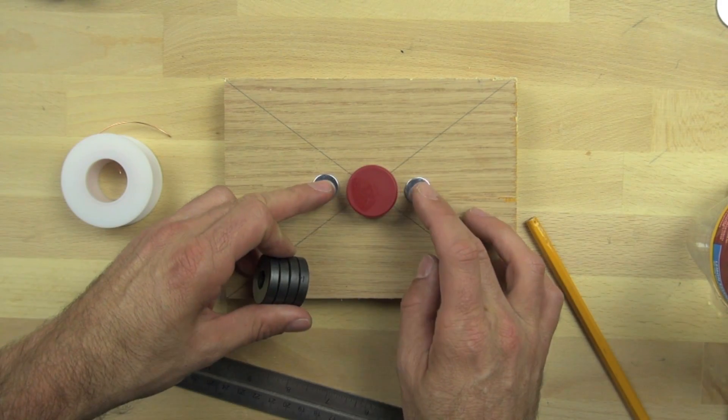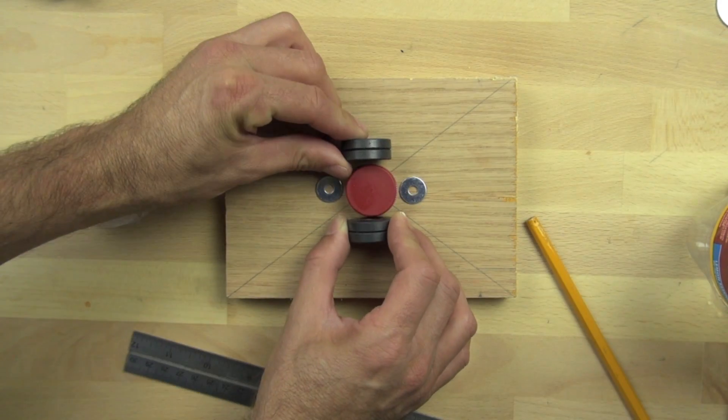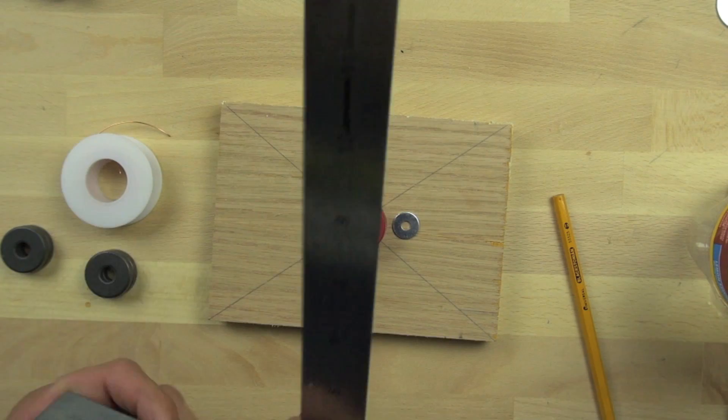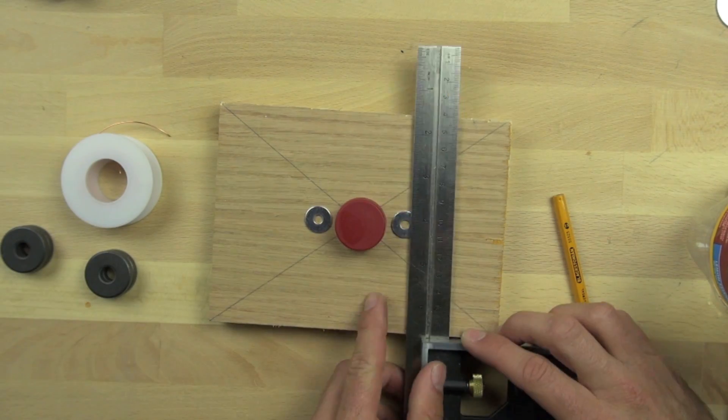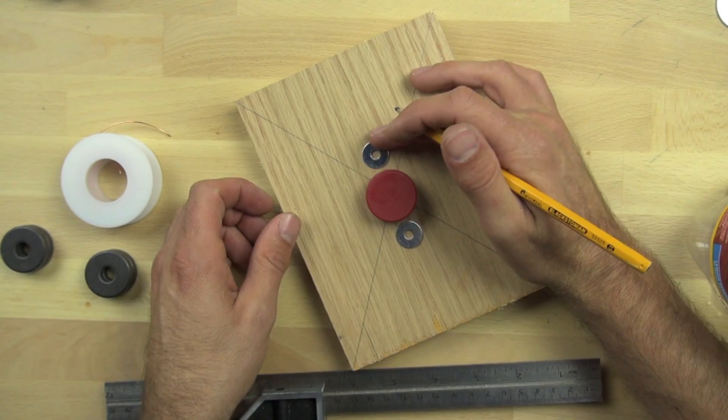Now be careful, the magnets will snap together. So now we're just positioning all our parts that we're going to need, and trying to figure out where they'll go and how close they'll need to be together.